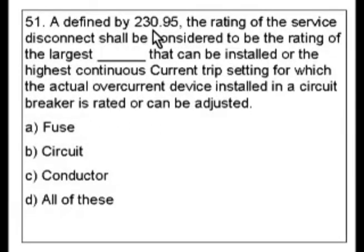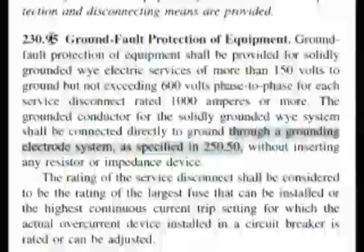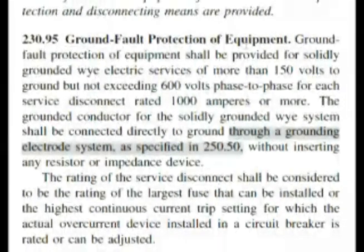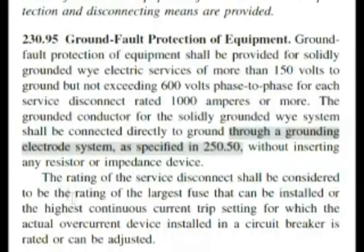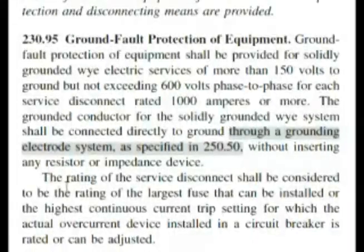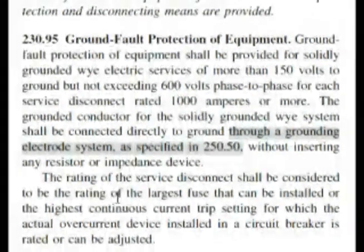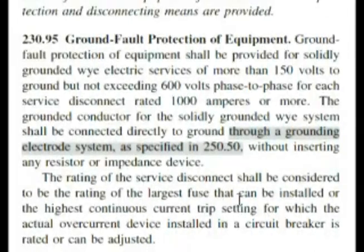Let's go right here to 230.95, because they're saying it's defined by this. Let's go right here in the codebook. So 230.95 is talking about ground fault protection of equipment. Now if you read down the second paragraph we have here, it's almost word for word. The rating of the service disconnect shall be the rating of the highest or the largest fuse that can be installed.